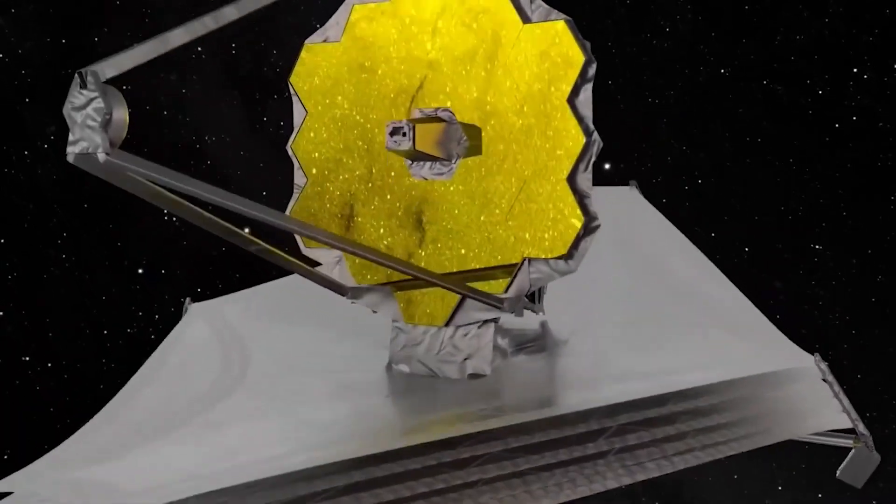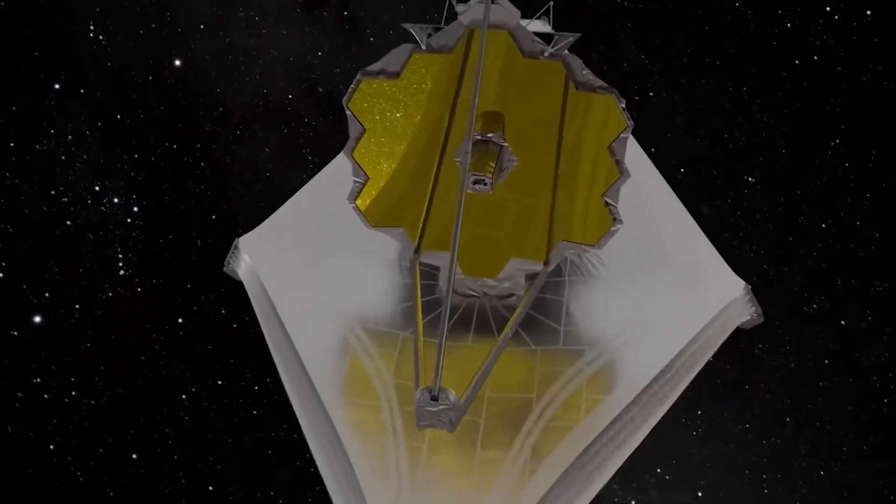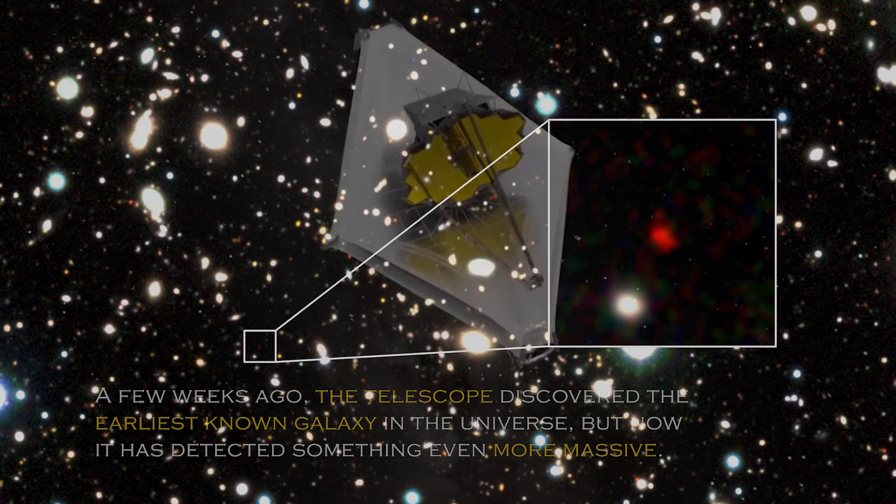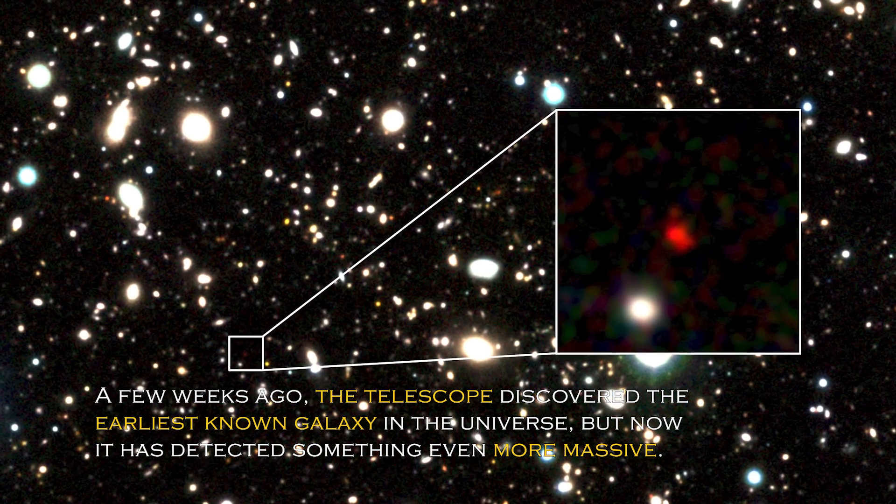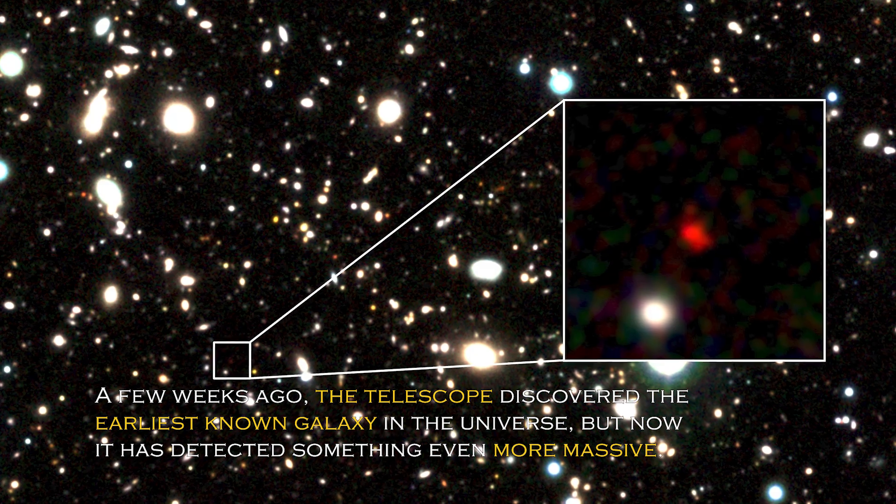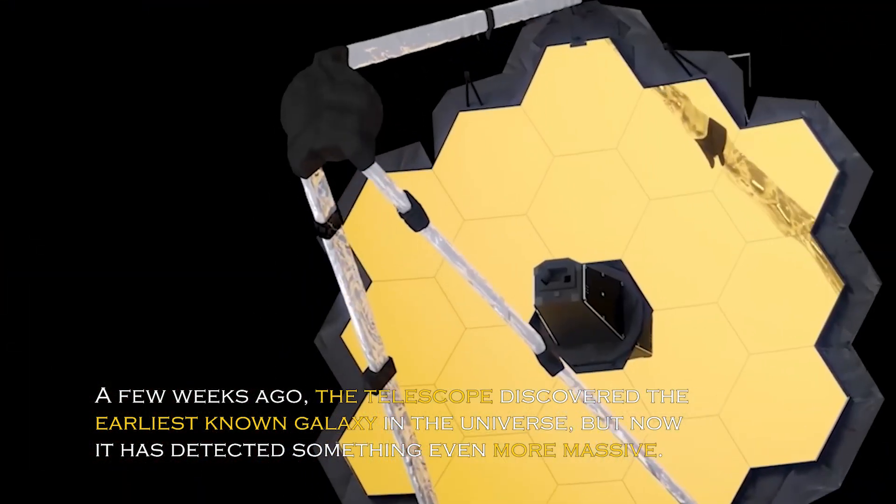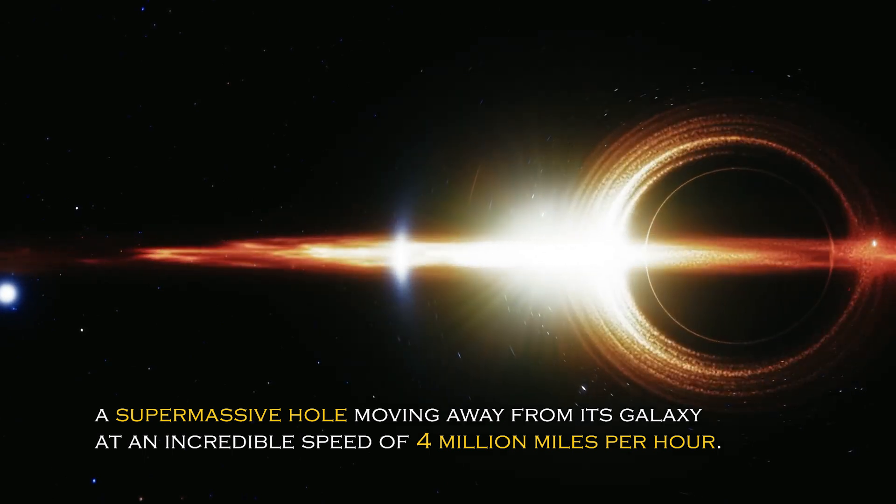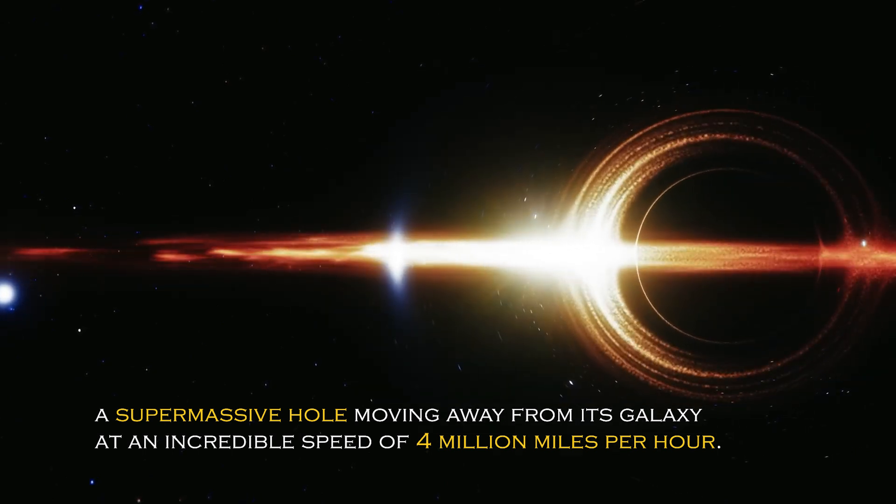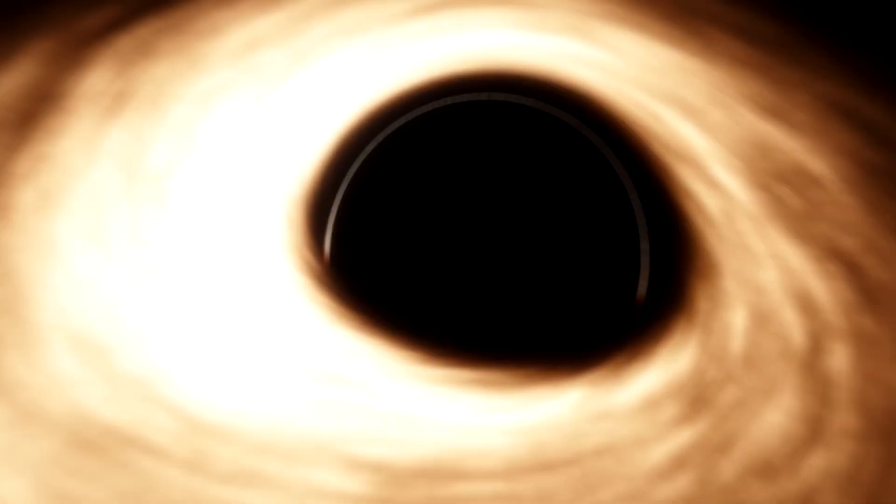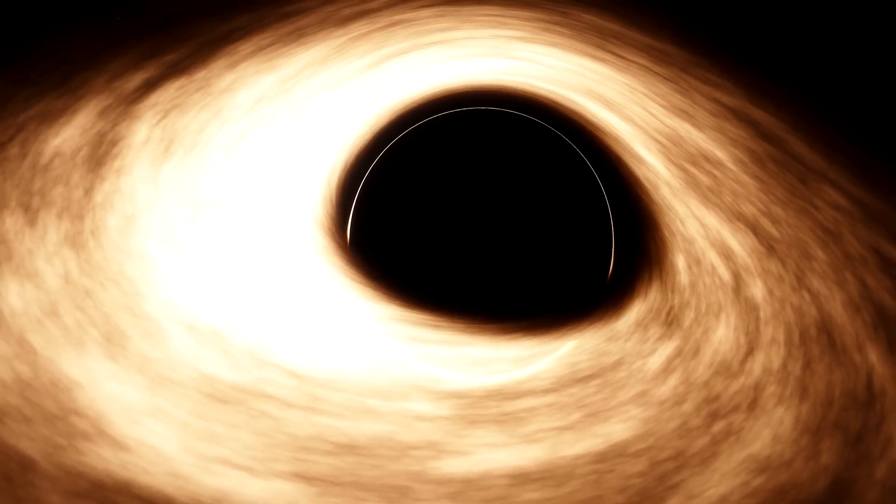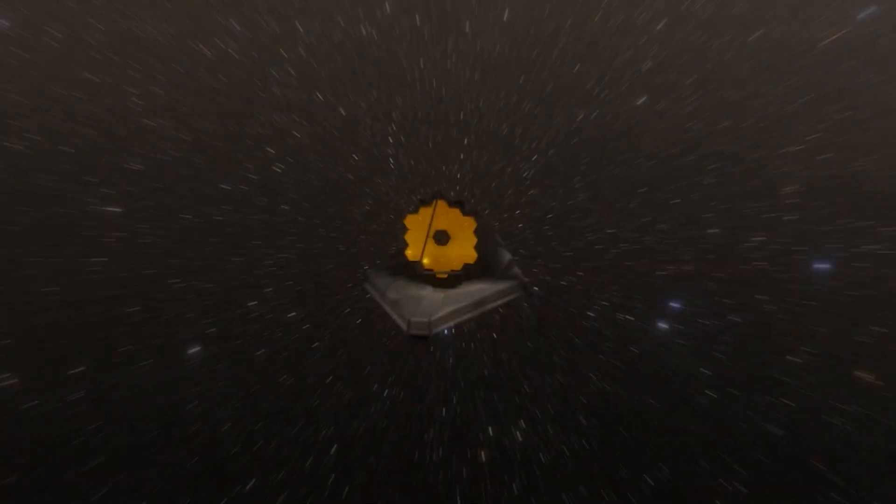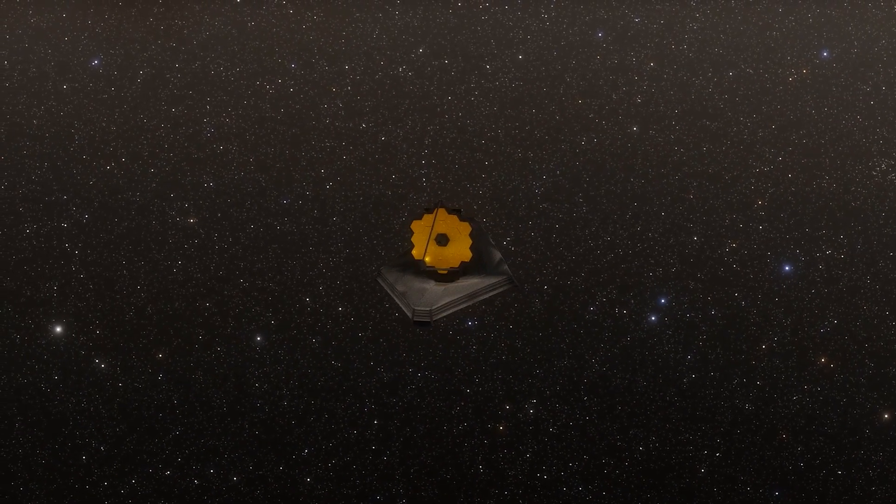In a surprising turn of events, NASA's James Webb Space Telescope has made a discovery that has astronomers around the world in awe. A few weeks ago, the telescope discovered the earliest known galaxy in the universe, but now it has detected something even more massive – a supermassive black hole moving away from its galaxy at an incredible speed of 4 million miles per hour. This discovery has very important implications and has generated much speculation among scientists and space enthusiasts about what it means for our understanding of the cosmos.